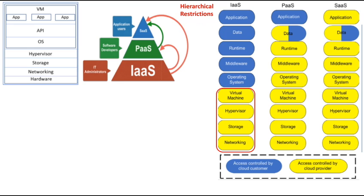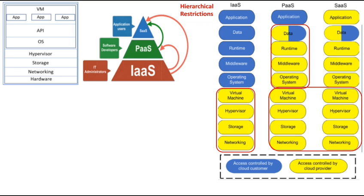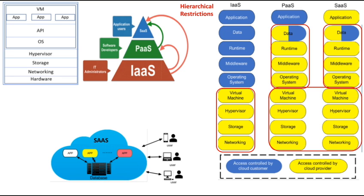This is the overview of access control for cloud service models. It implements a hierarchical restriction. Since IaaS has the most rights for the customer and SaaS has the minimum rights, whatever is restricted to the customer in IaaS is also not allowed in PaaS and SaaS. Similarly, whatever is not allowed to the customer in PaaS is also not allowed in SaaS.